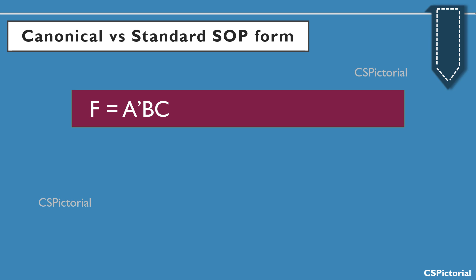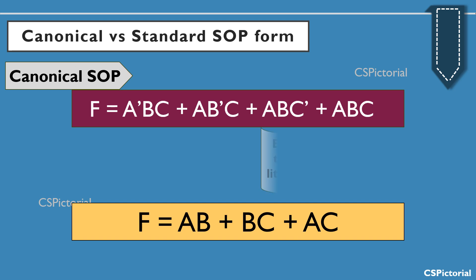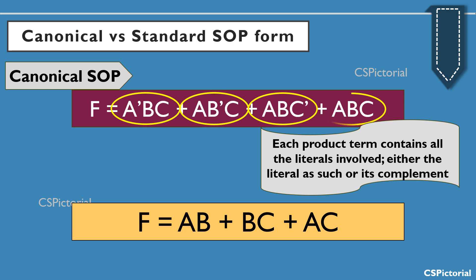As we are now familiar with SOP expressions, we will try to understand the difference between the two forms of SOP: the canonical form and the standard SOP form. Here are two sum of products expressions. The first expression is a canonical SOP because each product term contains all the literals involved, either the literal as such or its complement. In this example, three literals A, B, and C are involved, and each product term has all three literals. So this expression is a canonical SOP.